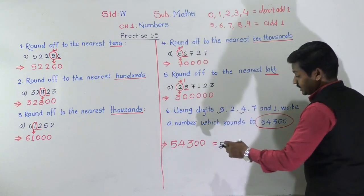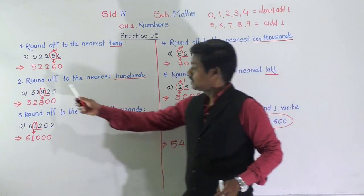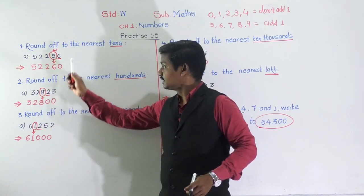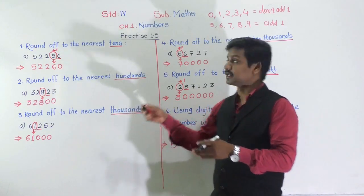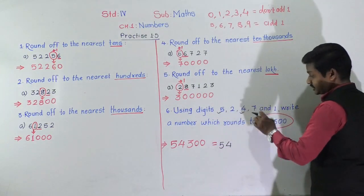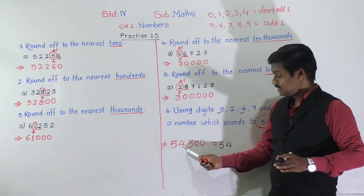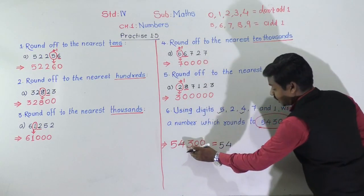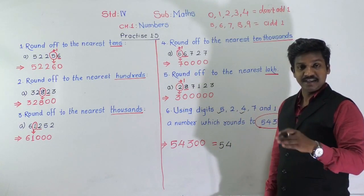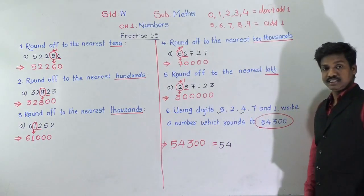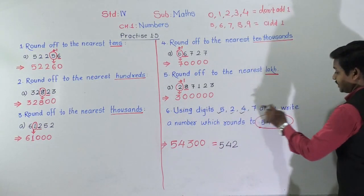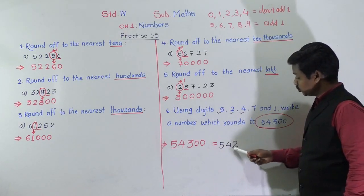The hundreds place is what's rounded off. Now, there is 3 at the hundreds place in the answer 54,300. But in the given digits, there is no 3. That means this 3 was obtained by adding 1. So the original hundreds digit must be 2, and 2 is there in the given digits. So there is 2 at the hundreds place. Remaining digits are 7 and 1.